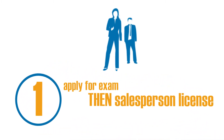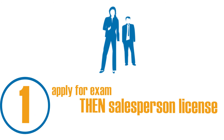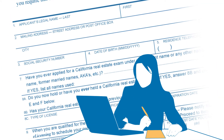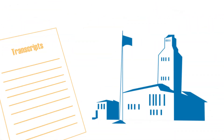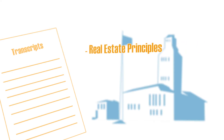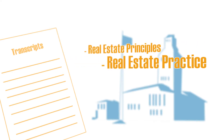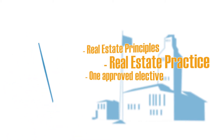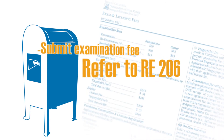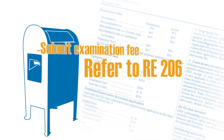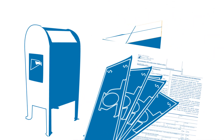The first way is to apply for the salesperson exam and then the salesperson license. Complete the salesperson examination application form RE-400. Submit certificates or copies of an official transcript showing completion of a course in real estate principles, a course in real estate practice, and one additional course from the list of approved electives. Submit the examination fee — refer to form RE-206 for current fees.